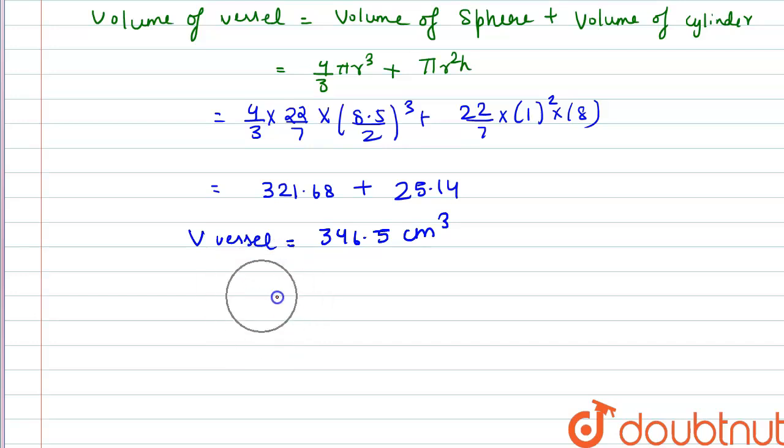And it is given that she finds it is 345 cm cubed. So 346.5 is not equal to 345. So we can say that 345 cm cubed is not correct.